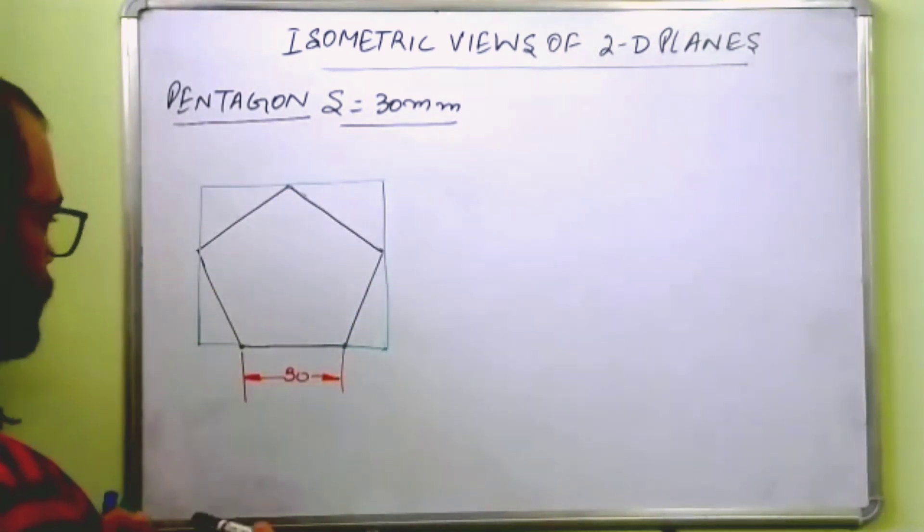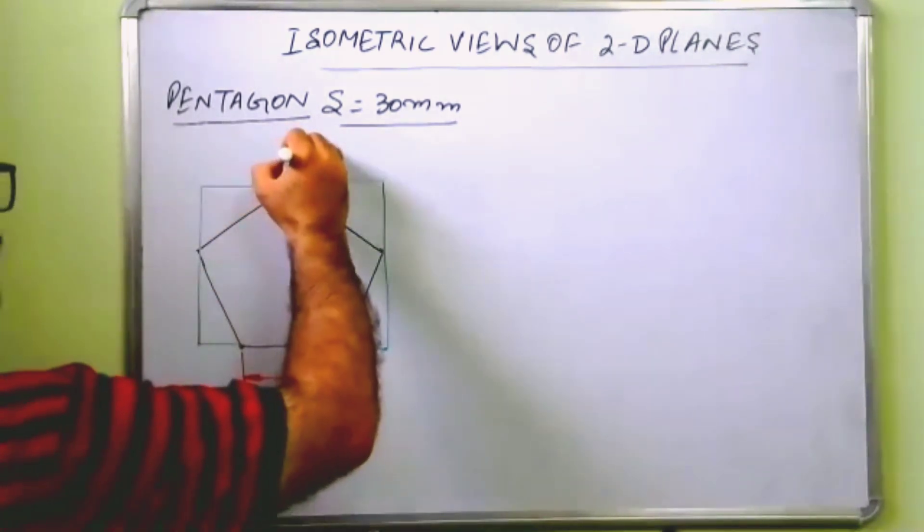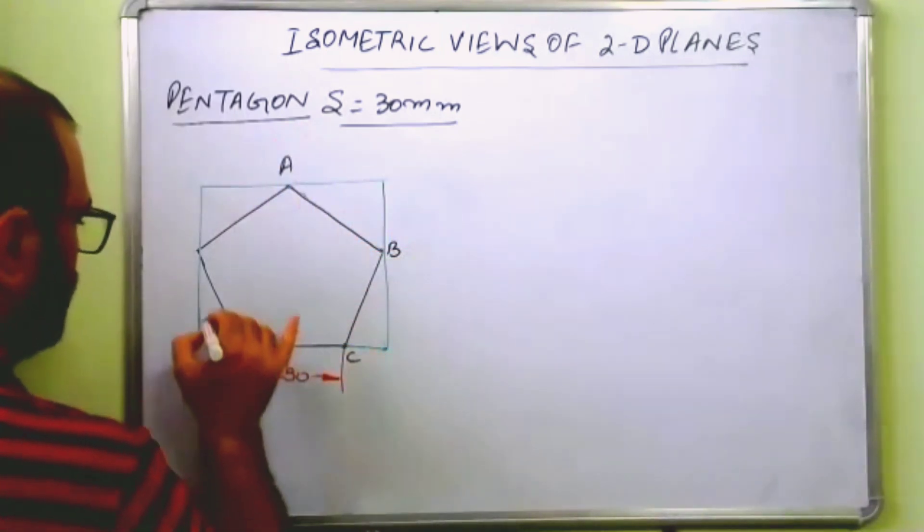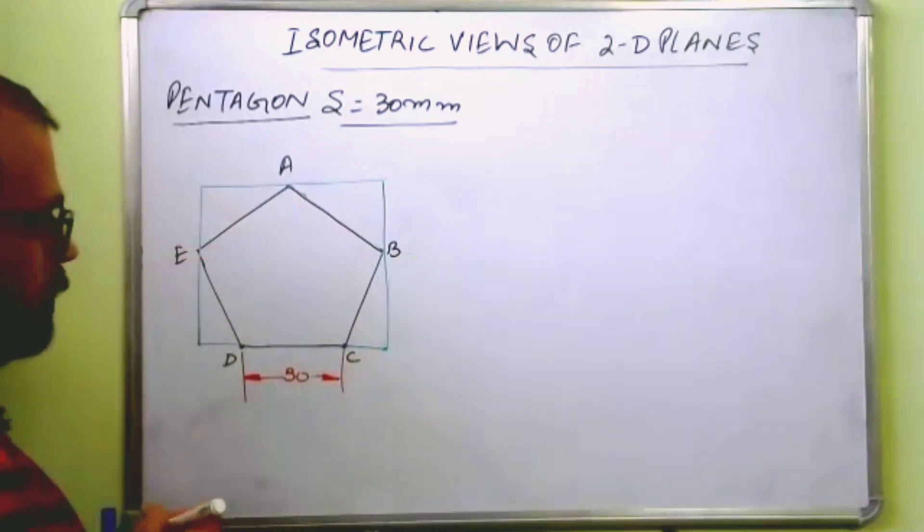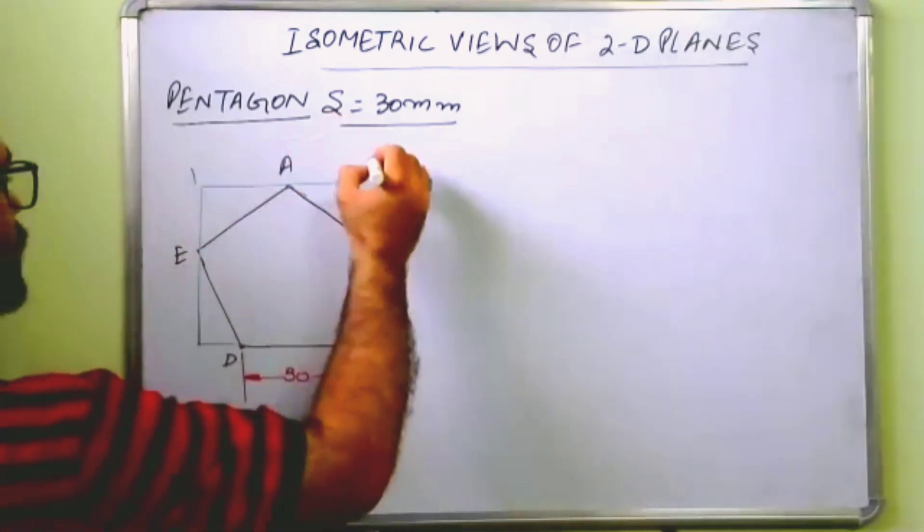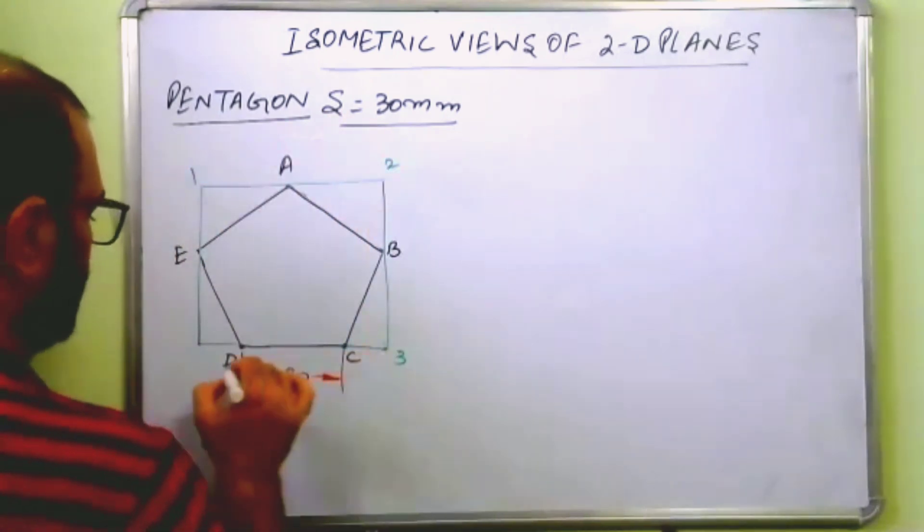So let us say this is A, B, C, D, and E. Then this is, let us say, 1, 2, 3, and 4.